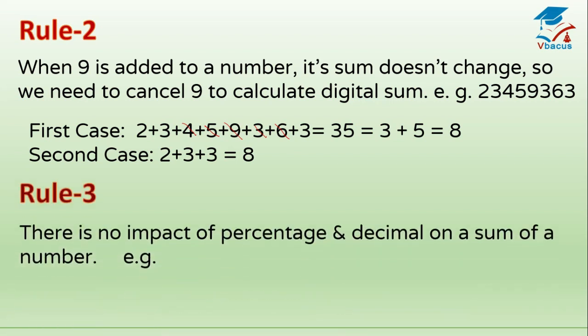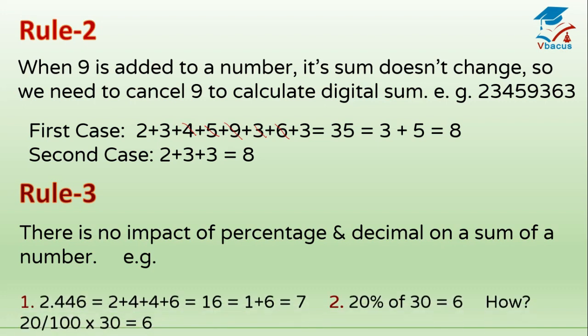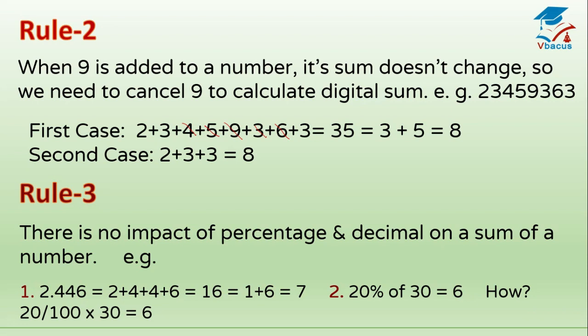Rule 3: There is no impact of percentage or decimal on the digital sum of a number. For example, 2.446 gives 2 plus 4 plus 4 plus 6 equals 16, then 1 plus 6 equals 7. For percentage: 20% of 30 equals 6, because 20 over 100 times 30 — cancelling the zeros gives 6.